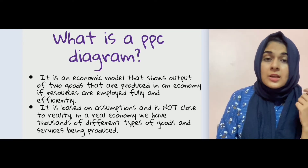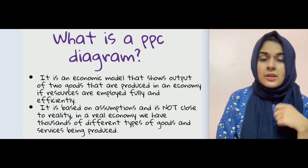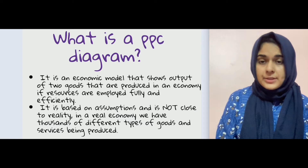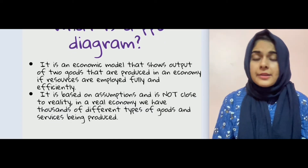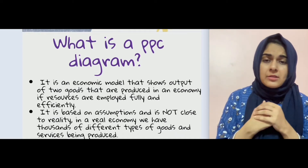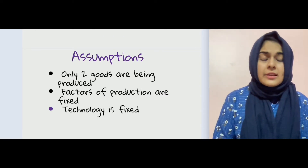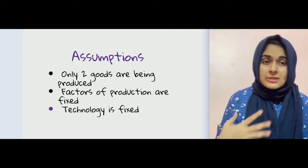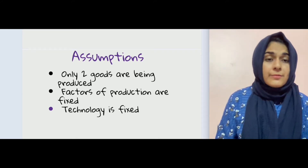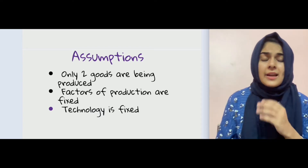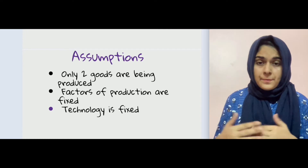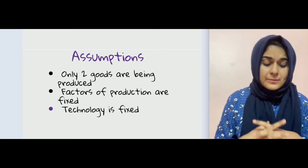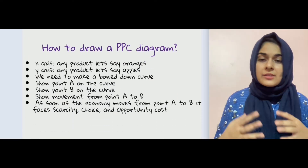PPC is also called the production possibility frontier in some books, but in the O-levels and IGCSE course they usually call it PPC — production possibility curve. The assumptions for PPC are: only two goods are being produced; factors of production (land, labor, and capital) are fixed; and technology is also fixed. So land, labor, capital, and technology are not increasing or decreasing — that's the scenario in which we discuss movements of the PPC.